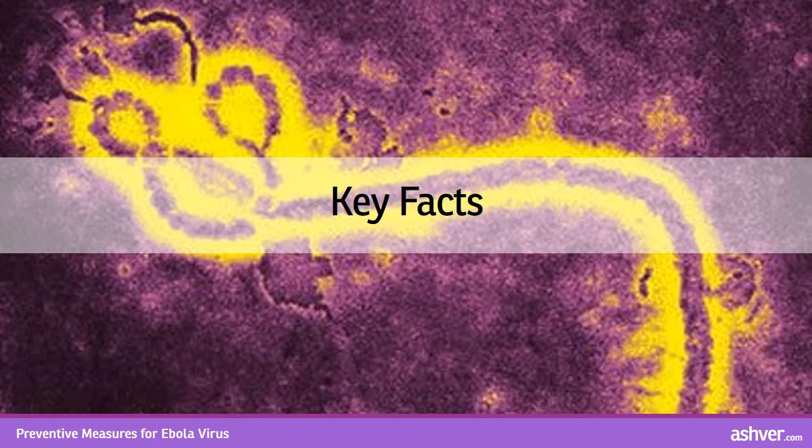Key facts: Ebola virus disease, formerly called Ebola hemorrhagic fever, is a severe, often fatal illness in humans. Ebola virus disease outbreaks occur primarily in remote villages of central and west Africa, near tropical rainforests. The virus is transmitted to people from wild animals and spreads in the human population through human-to-human transmission.